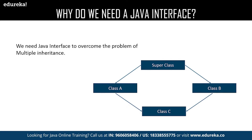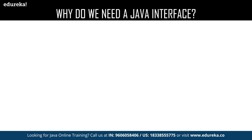Here, as you can see, there is a super class which is inherited by two classes called class A and class B. Now we are trying to inherit the properties of class A and class B into a new class C, which is practically impossible in Java. That's when the interface comes into the picture — using interface, we can achieve multiple inheritance.